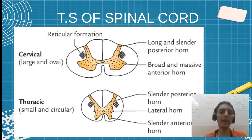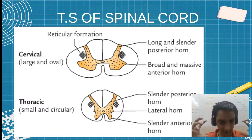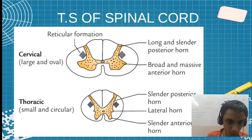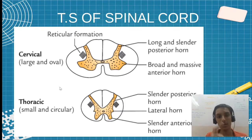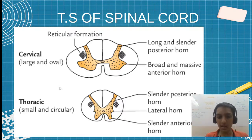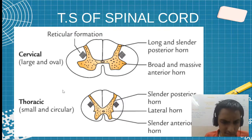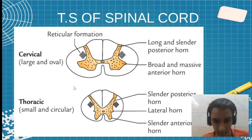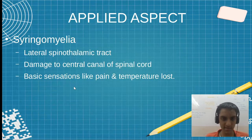This fundamental point is important. In cervical, since it is large and oval as shown in the diagram, the horns will be a little large and thicker. In thoracic it is the opposite — because it is very small and circular, the horns will be very thin. This is the basic difference.